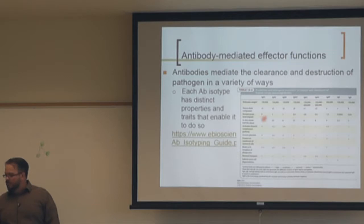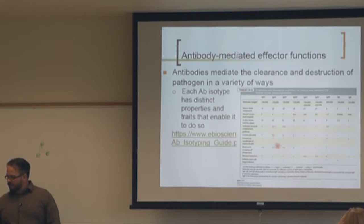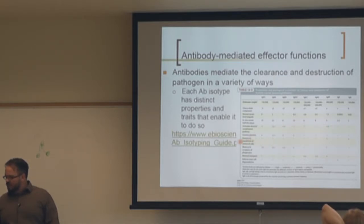Key things to memorize: which isotype is most and least abundant, which form pentamers, which form dimers, and which are monomers. Each isotype has different half-lives and slightly different functions.